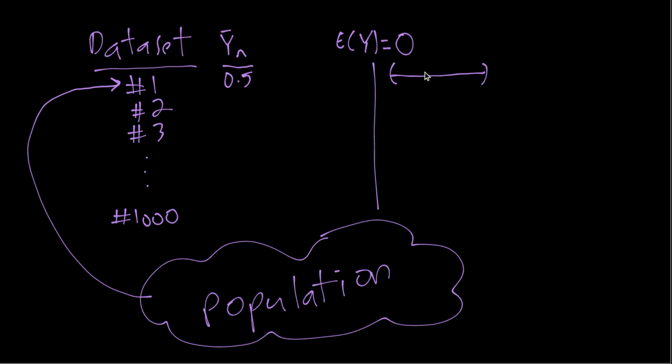So we can then imagine randomly sampling a second data set from the population. So now we have different numbers, so we'll have a different sample average. We'll imagine we get 0.2. So again to generate our interval, we're subtracting 0.4 and adding 0.4. So 0.2 minus 0.4 is negative 0.2. That'll be somewhere to the left of 0. 0.2 plus 0.4 is 0.6. That'll be somewhere to the right of 0.